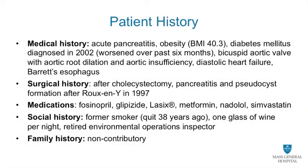His past medical history is remarkable for repeated episodes of acute pancreatitis. He is obese and was diagnosed to have diabetes mellitus in 2002, which has worsened over the past six months. He also carries the diagnosis of bicuspid aortic valve, aortic root dilatation, aortic insufficiency, diastolic heart failure, as well as Barrett's esophagus.